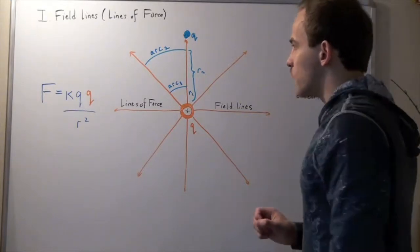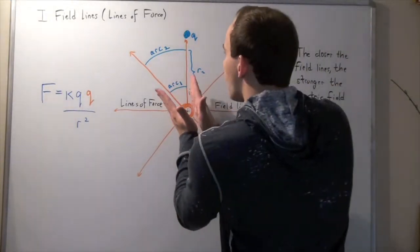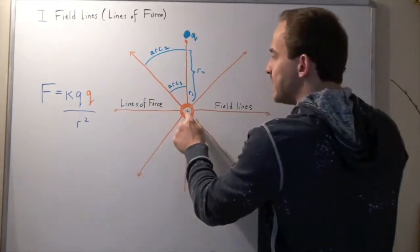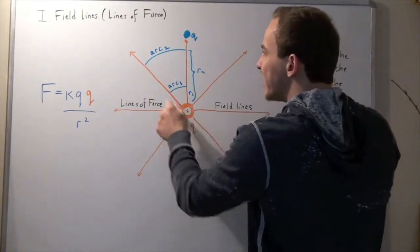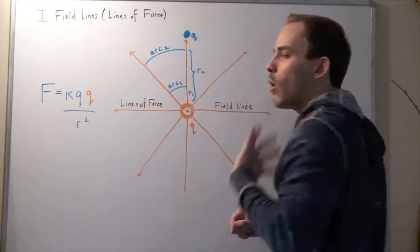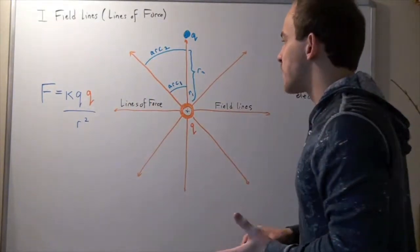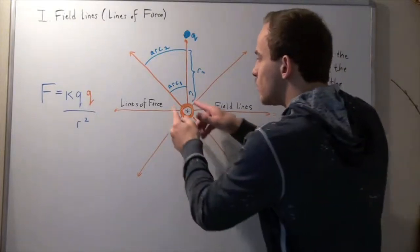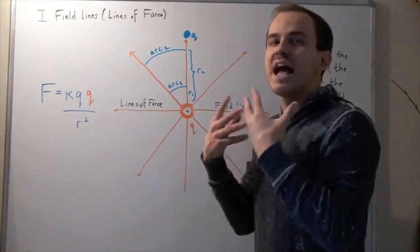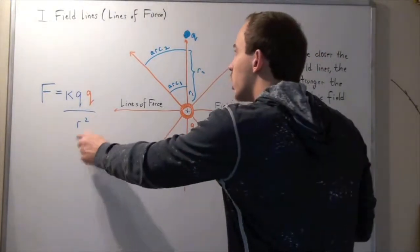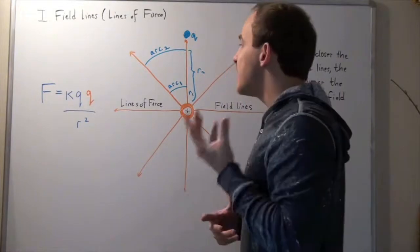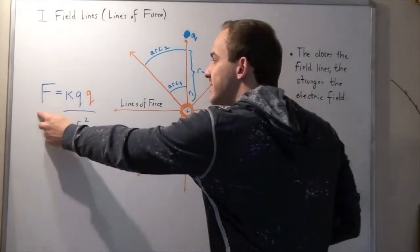So notice also that as these lines point outward, as we move further away from this point charge, these arches get longer and longer. Now, what I'm trying to say is the following. As the distance between these field lines, these arches, gets smaller, that means the distance R from our charge to this charge gets smaller, and that means that our force gets larger.